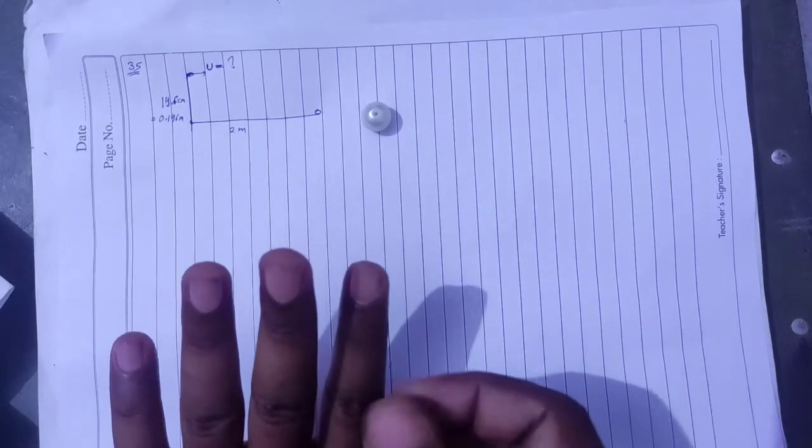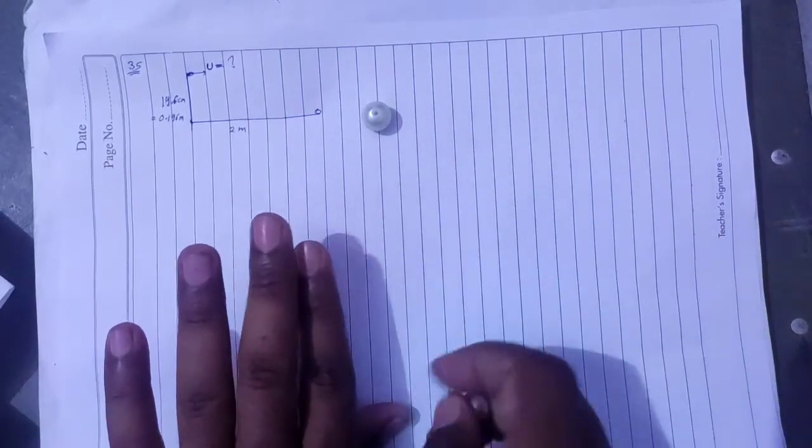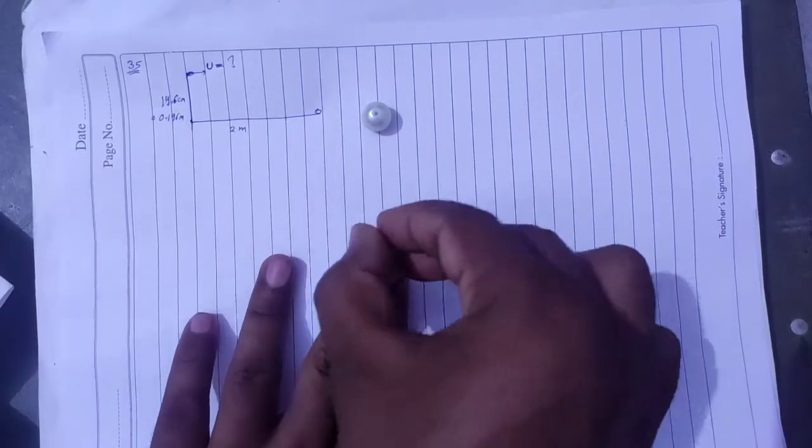So if we hit it, its height is 19.6 cm and the distance between the golis is 2 meters. So if we hit it, then it will win. Right. So we hit it directly on the ground.